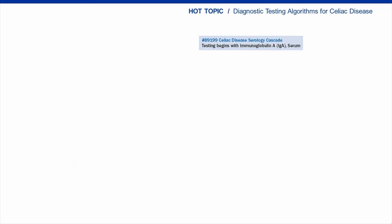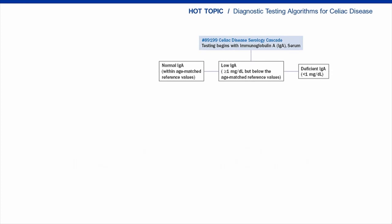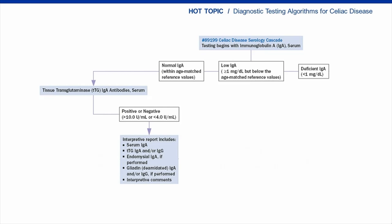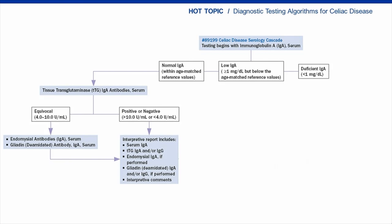The serologic cascade begins with total IgA quantitation, with all further testing reflexing automatically based on the IgA result. The IgA result is classified as normal (within the age-adjusted reference range), low (detectable but below the reference range), or deficient (undetectable by nephelometric assay). Samples with a normal IgA result automatically reflex to a TTG-IgA antibody. For positive or negative results, no further testing is required, and the final report includes the total IgA and TTG-IgA results along with an interpretive comment. However, if the TTG-IgA result falls into the equivocal range, then EMA and deamidated gliadin IgA testing is performed.